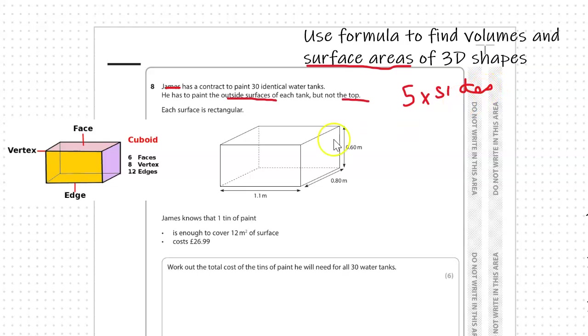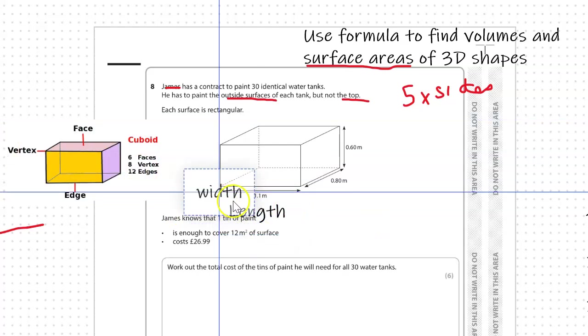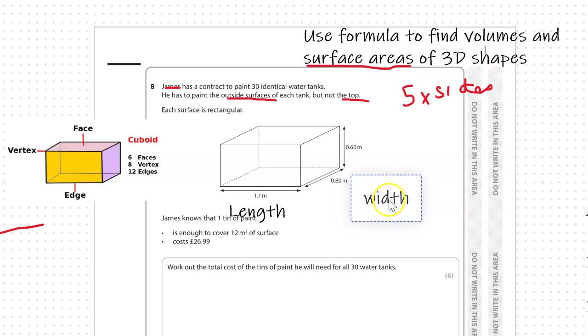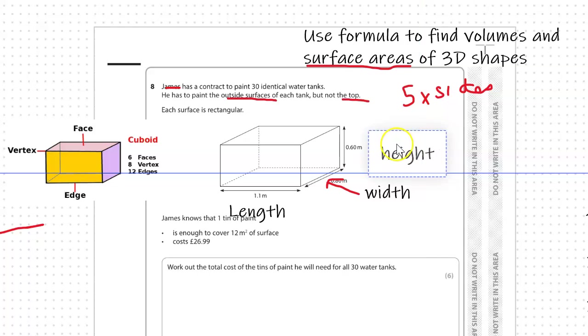Just to make it a bit clearer, we're going to label the dimensions. The length is the longest side. The width in this occasion is here, and we're going to call this height. Here is 0.6 meters. That is useful for when we label the formula.